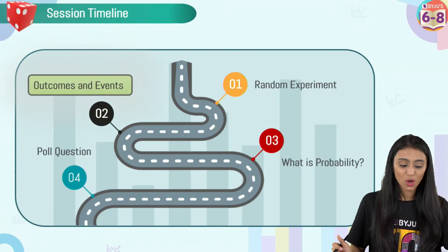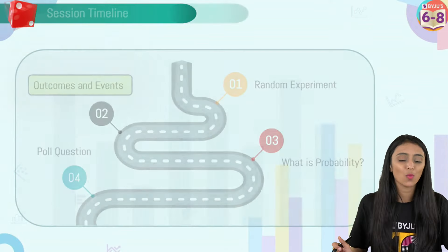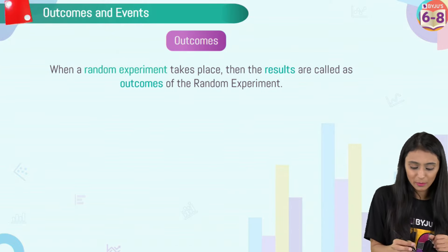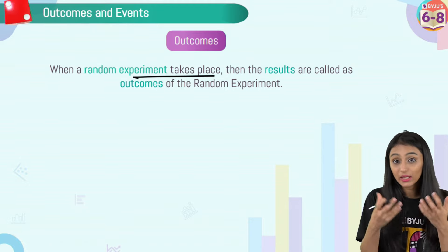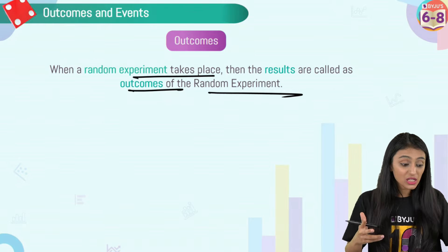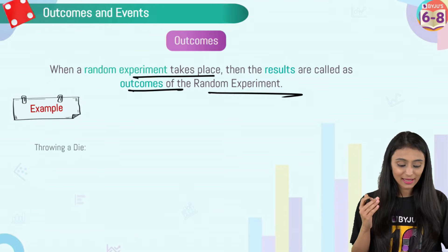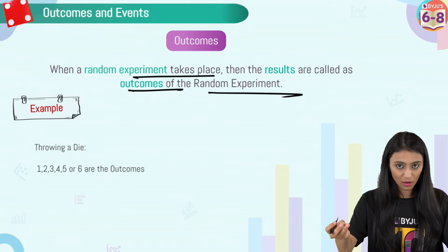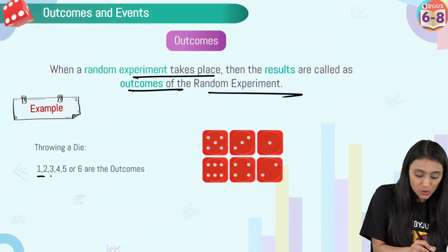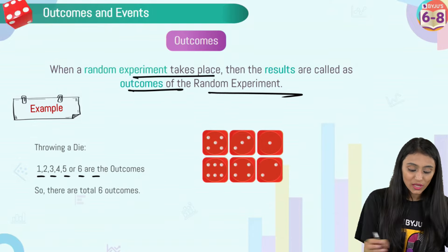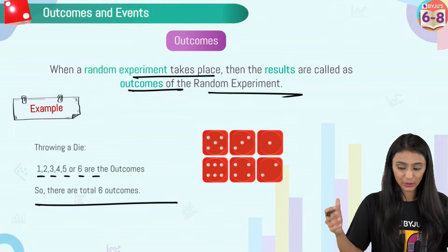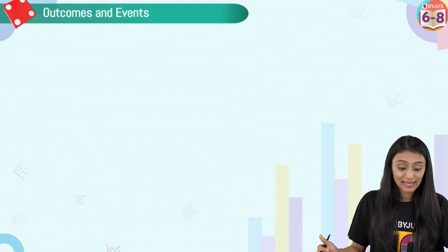Next: outcomes and events. When a random experiment takes place, the results you get are called outcomes. For example, tossing a coin gives outcomes: head and tail. Throwing a die gives outcomes: 1, 2, 3, 4, 5, 6 — a total of six outcomes. Outcomes are simply the possible results of the experiment.